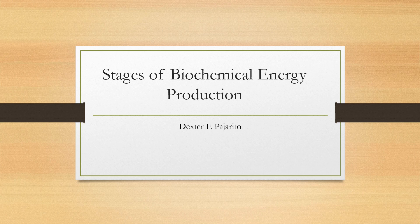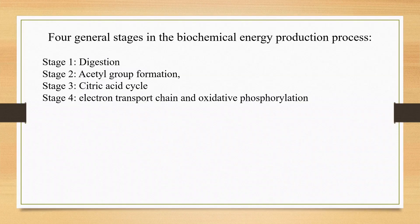Hello everyone. Welcome once again to this lecture on biochemistry. Today I'll be discussing the stages of biochemical energy production. I'm Dexter Pajarito. The four general stages in biochemical energy production are: first, digestion; second, acetyl group formation; third, citric acid cycle; and fourth, electron transfer chain and oxidative phosphorylation.